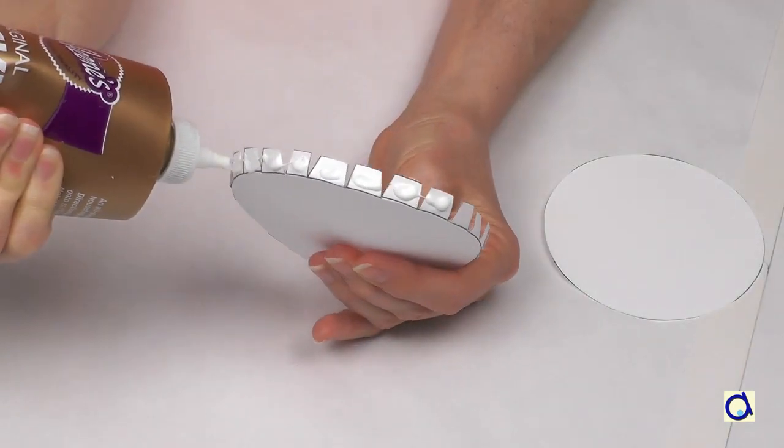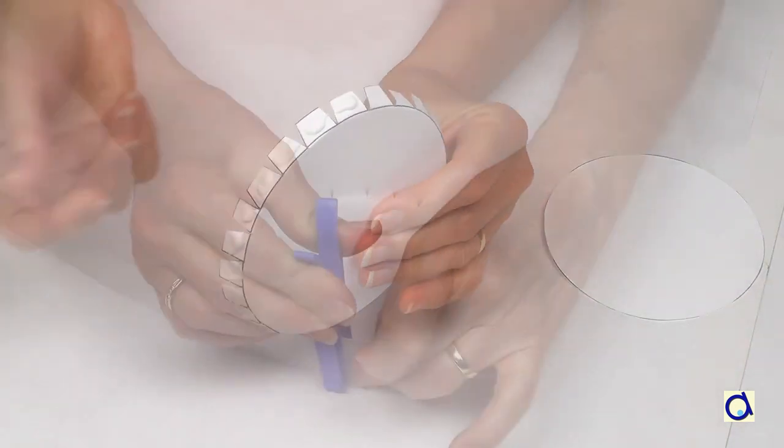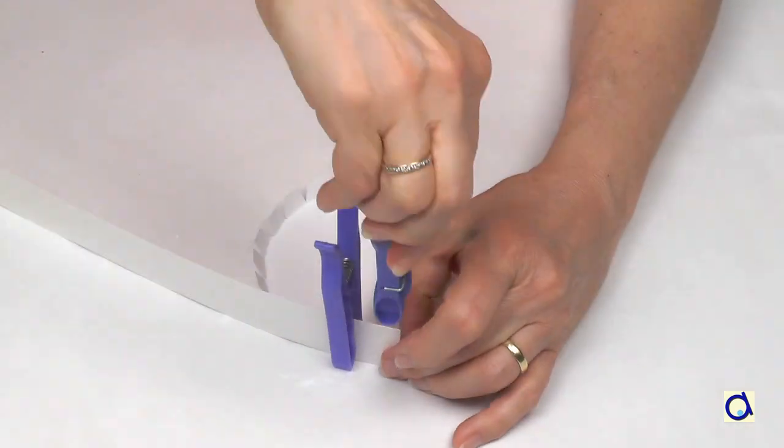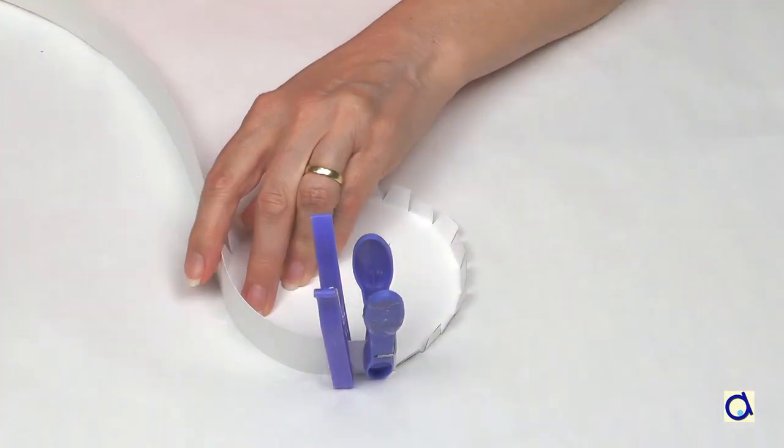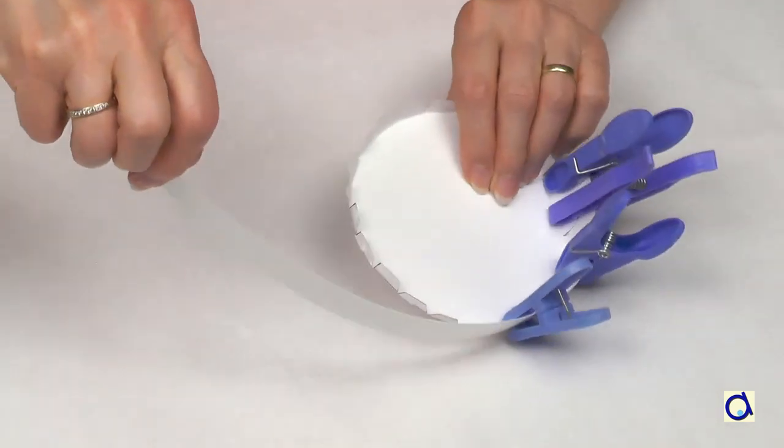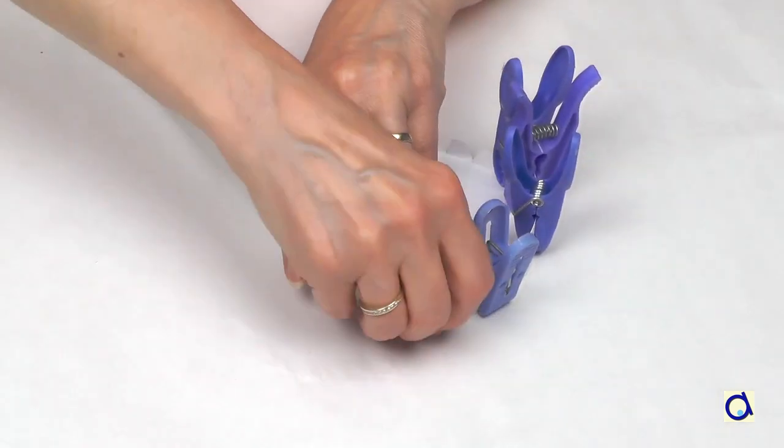Put white glue on some of the tabs of the circle and glue the paper strip on them. Hold the strip in place with clothespins. Continue the same way all around the circle.